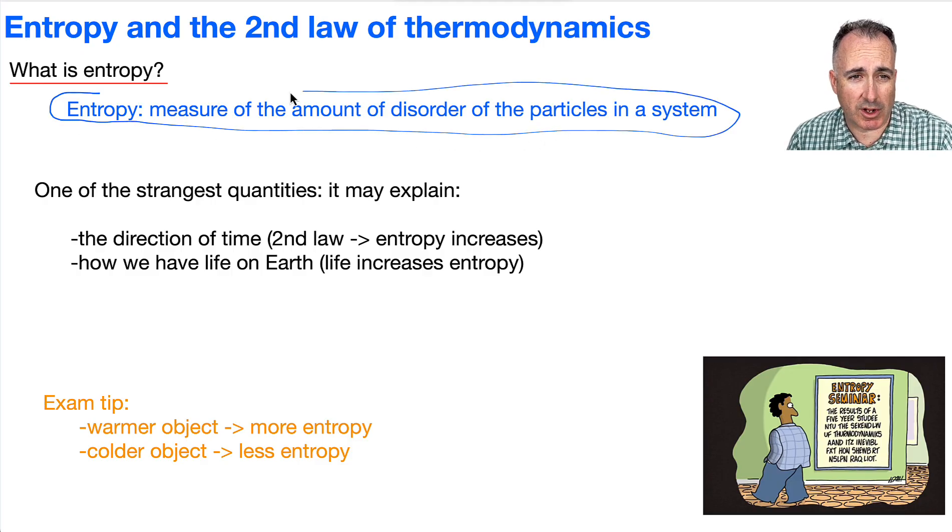We don't go into so much detail in the IB class. Thank goodness, because there's a lot to it. But we can mostly say that it's the measure of the amount of disorder of the particles in a system. That would be an accurate enough version that we need for the IB at least.